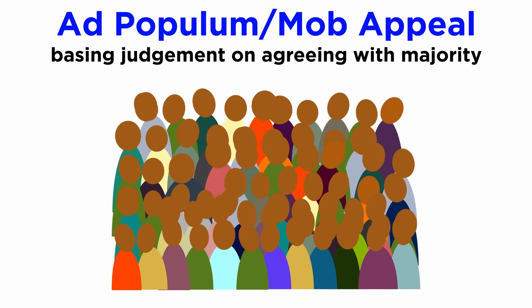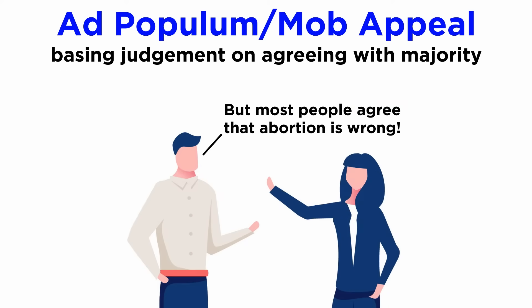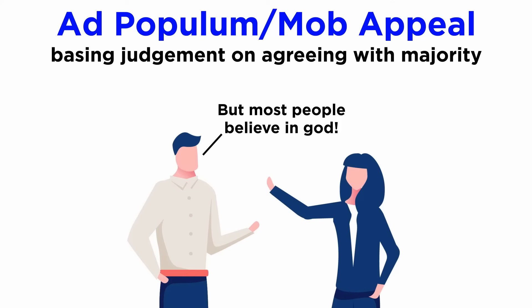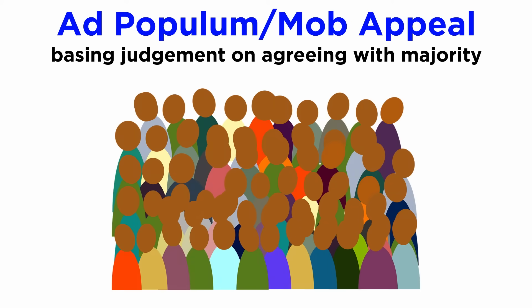Another example related to the appeal to emotions is the ad populum, or mob appeal, which is when an argument is accepted or rejected only because the majority of people judge likewise. When someone is trying to defend the prohibition of abortion because the majority of people agree that it is wrong, or trying to prove the existence of God because most of the population thinks that God exists, this is a fallacious way of thinking. Nothing in the opinion of the mob makes something true or false by itself.